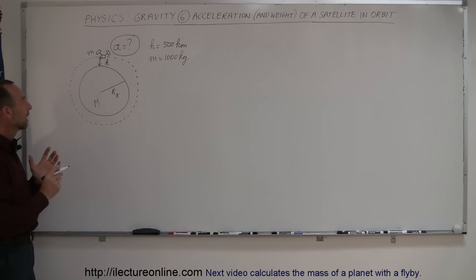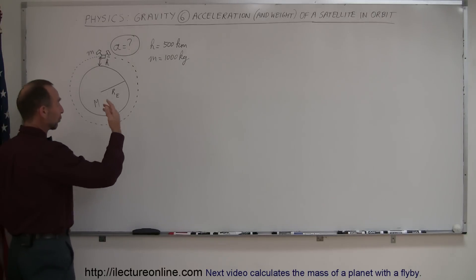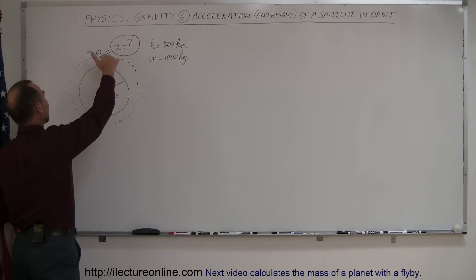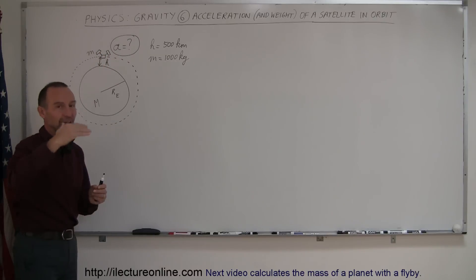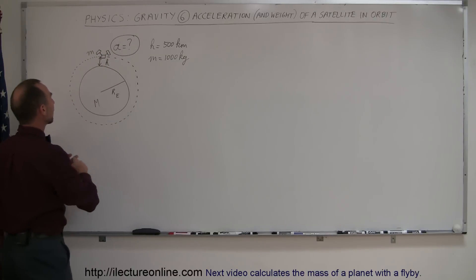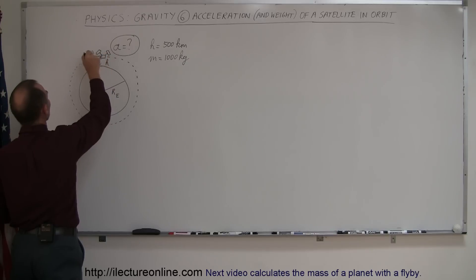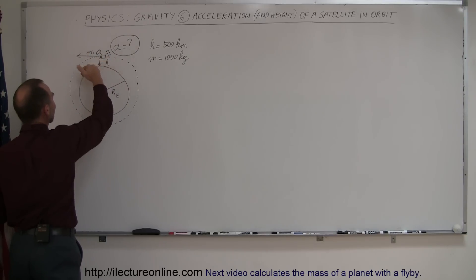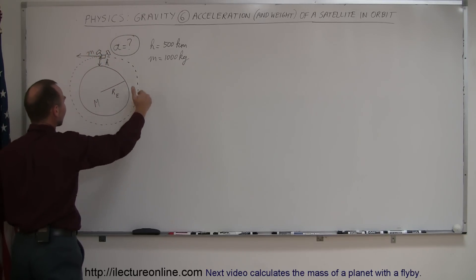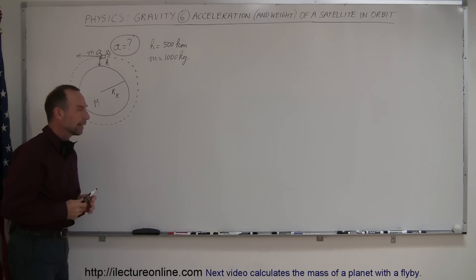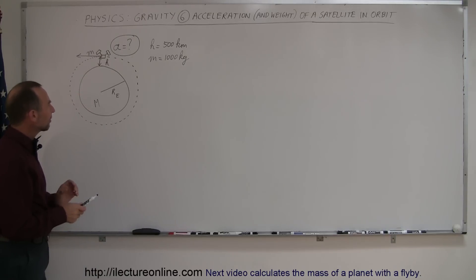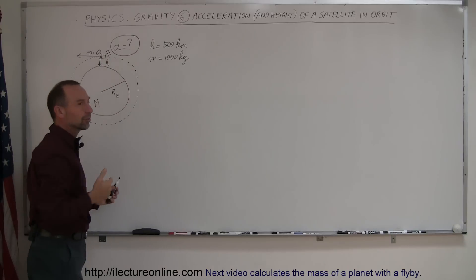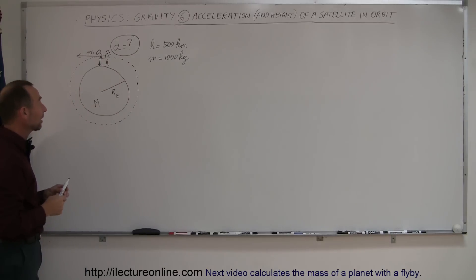That's because in orbit, a satellite — and of course any capsule containing human beings — is actually in free fall around the Earth. It's actually falling towards the Earth, and only because the satellite has sufficient velocity will it never hit the Earth but continue to fall around it. Because of that, we need to figure out the acceleration due to gravity: what is the actual acceleration of the free fall motion of the satellite?